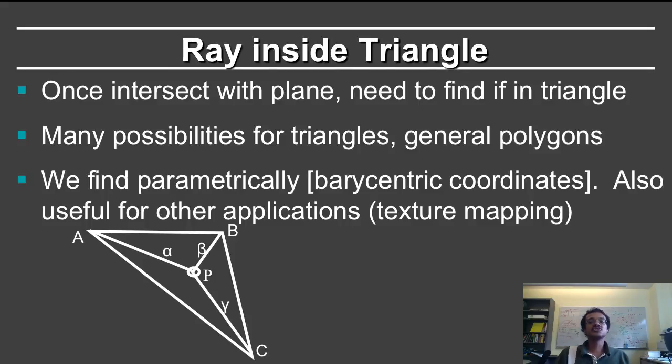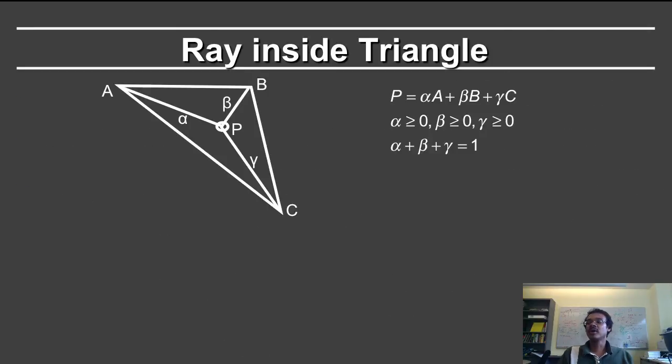A point P will be given by alpha A plus beta B plus gamma C, where they sum to 1. And furthermore, it's a convex combination which means that alpha, beta, and gamma are all positive. So now the question is, how do we solve for this?